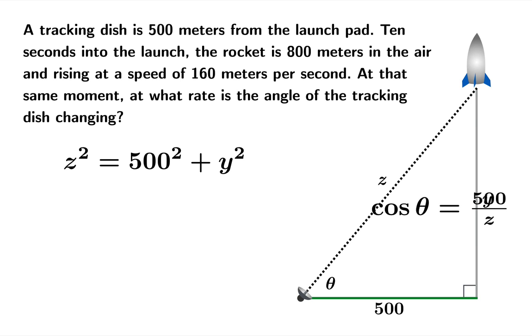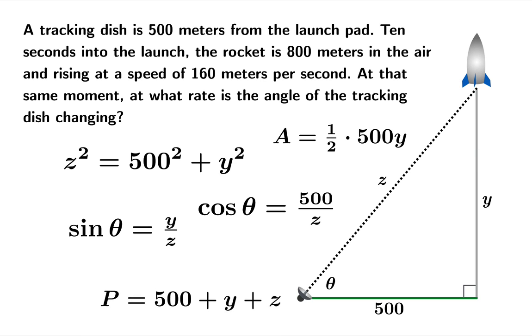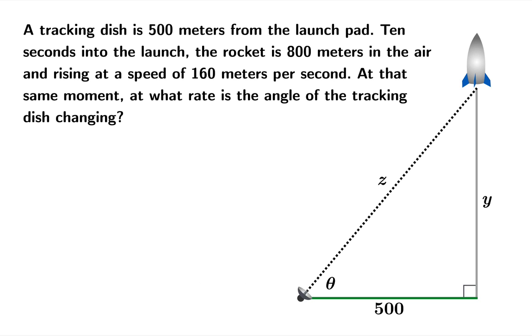Now there are a lot of different relationships you could find in this triangle. And if you're willing to bring in area and perimeter, you could find some more. It's a rather bewildering collection of facts. And you could just start writing them down and taking derivatives and trying to hack through a problem. But maybe it would be better to take a step back and think about what you're trying to accomplish. We're trying to find the rate at which the angle is changing. In other words, we're trying to find d theta/dt.